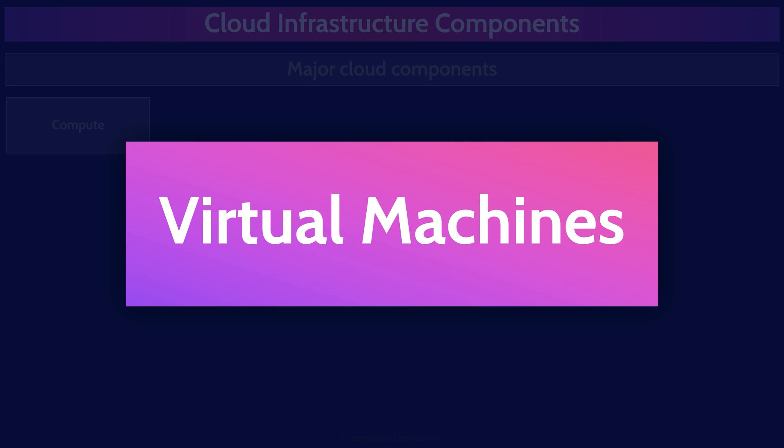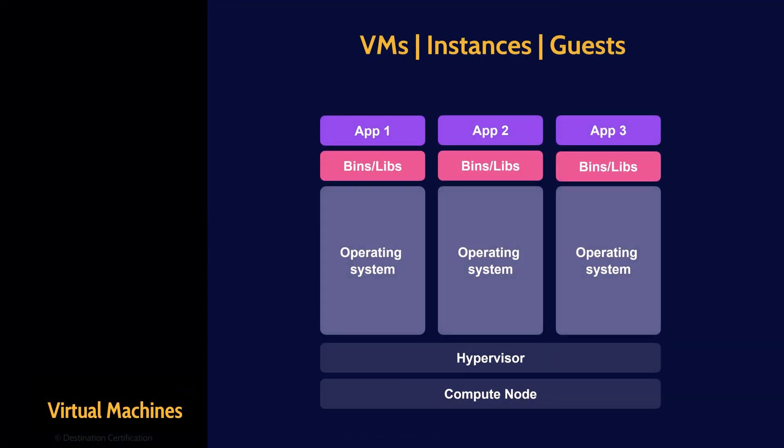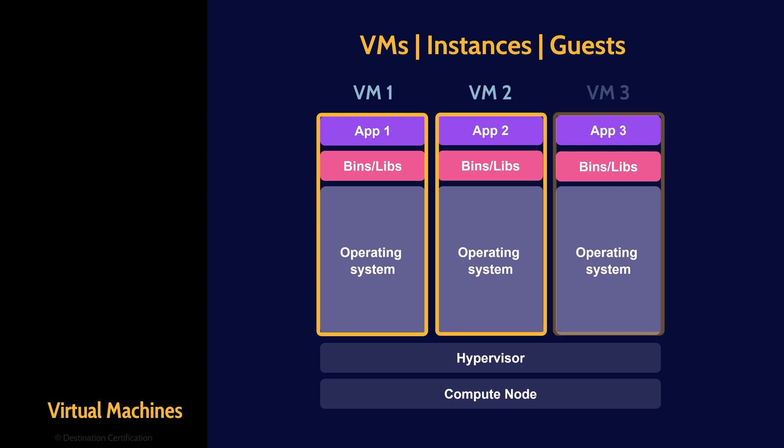A virtual machine is an operating system and some applications running on top of a layer of abstraction instead of running directly on the physical hardware. As you can see in this diagram, at the bottom we have the compute node — the physical server comprising a CPU, a bunch of RAM, a network interface card, etc. In a traditional computer, the operating system runs directly on top of the hardware, but in a virtual machine, we have a layer of abstraction between the hardware and the operating system. What is providing this layer of abstraction? The hypervisor.